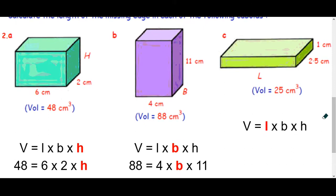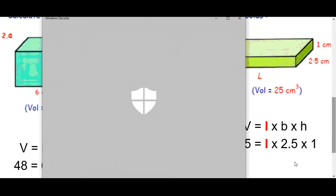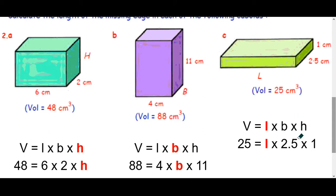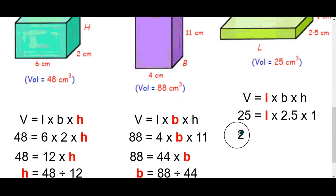Okay last one to look at here. We're trying to work out the length. Again we've been given the volume. We've also been given the breadth and the height. So we'll feed our numbers in. 25 equals length times 2.5 times 1. We can see here that 2.5 times 1. We're able to do that. It's just 2.5. Again some of you might be able to see the answer. But it's 25 divided by 2.5. And that would just be 10 centimeters to finish.